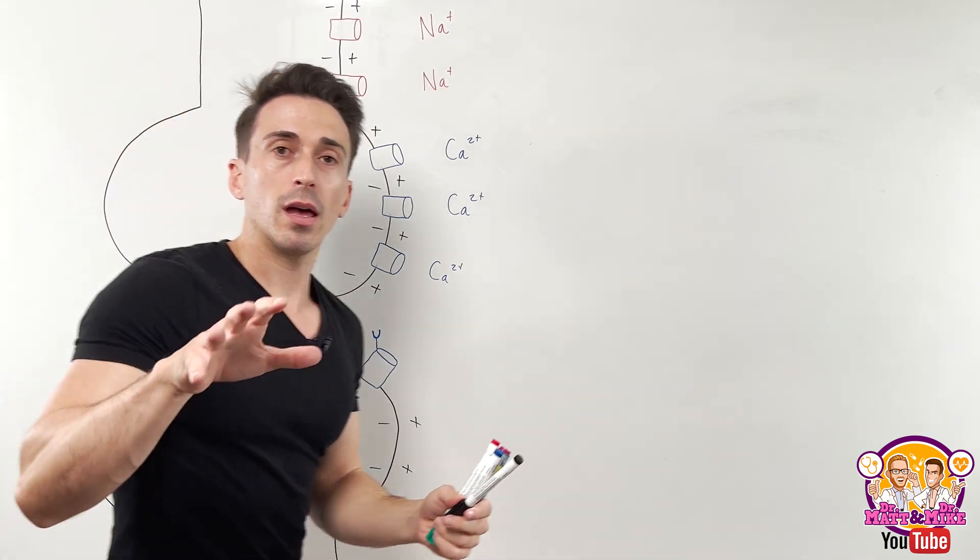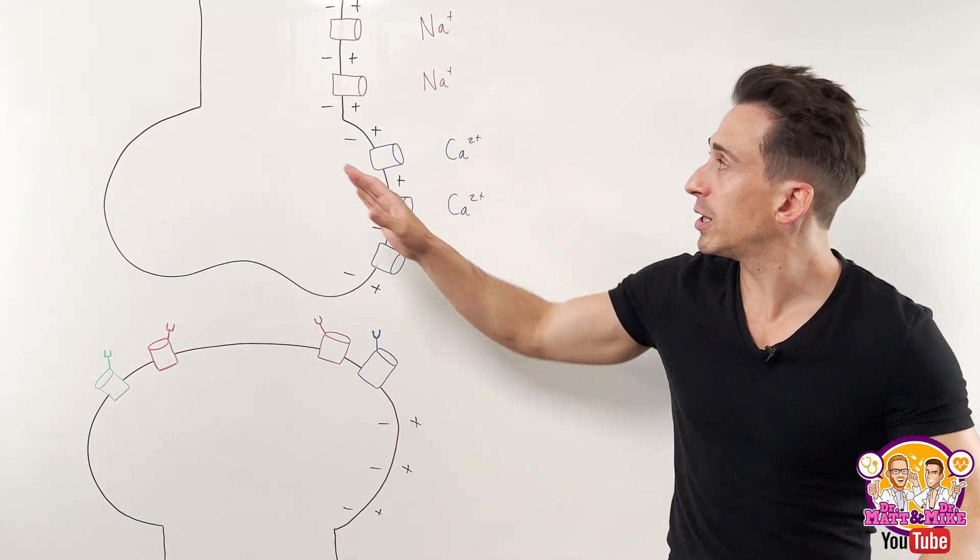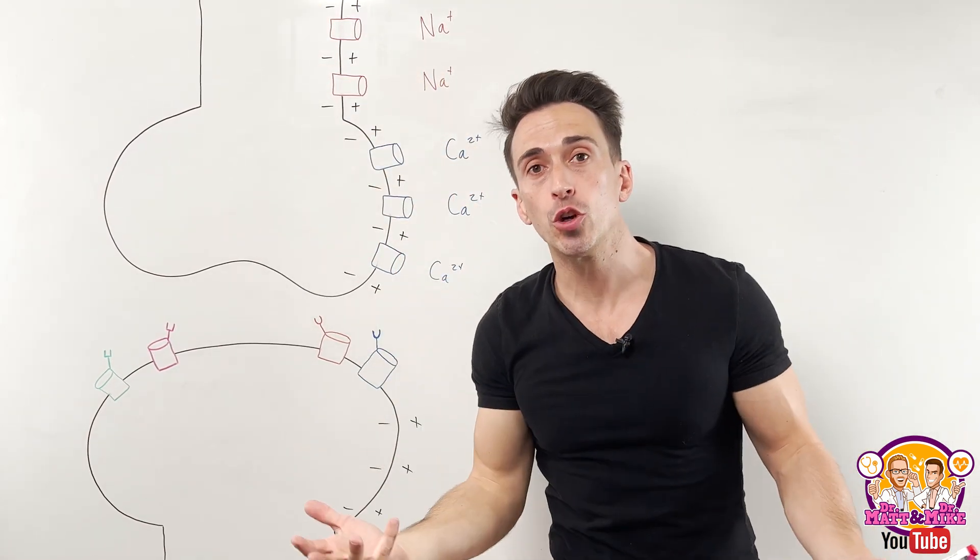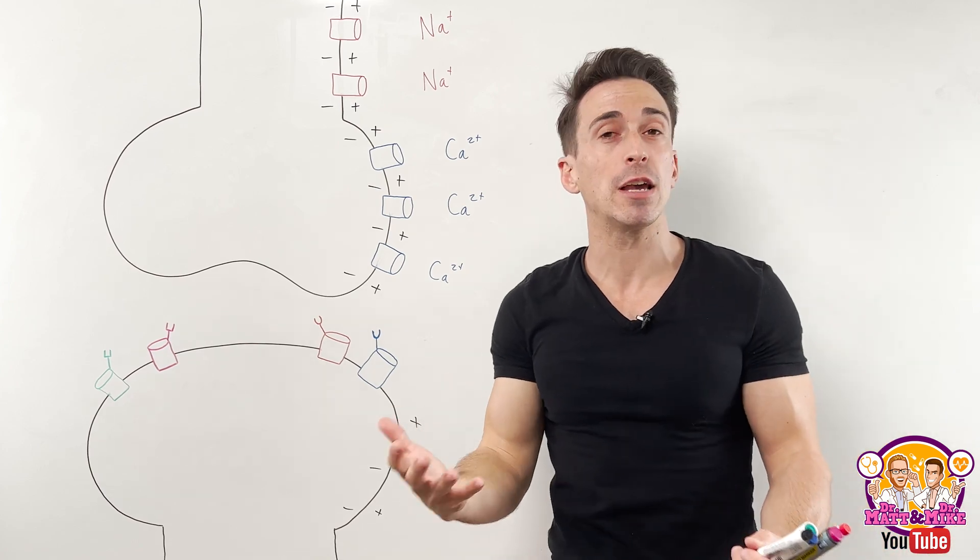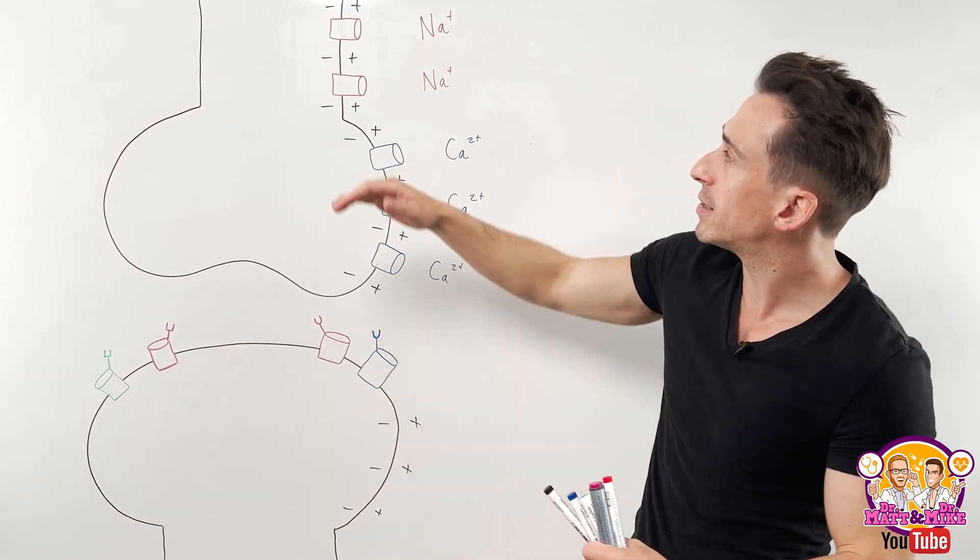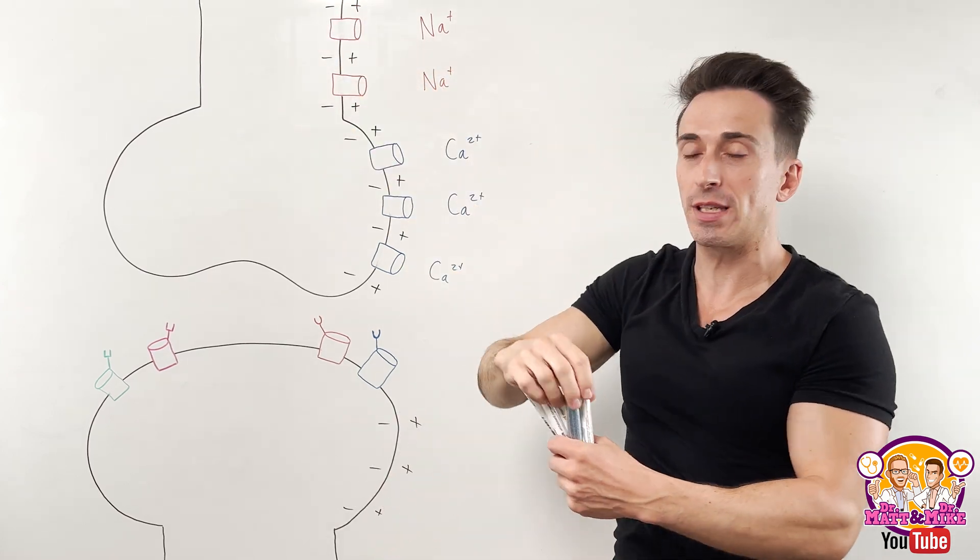Now with synaptic transmission, this first neuron will be sending its action potential. So I assume you already understand action potentials. If not, go back and watch my action potential video. I explain it all in detail. As this action potential moves down, what's happening?